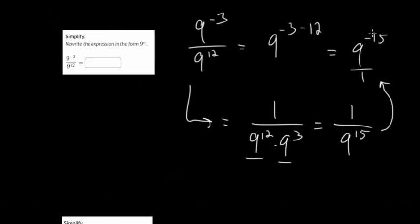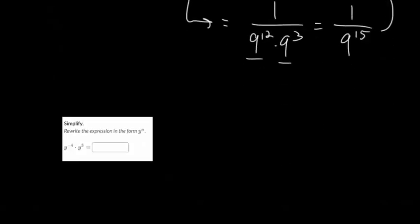Remember, when you have 9 to the negative 15, it just means divide by 9 fifteen times.